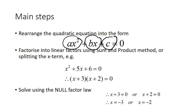So this is what we need on the left-hand side and we write the zero on the right-hand side. Once we've written our quadratic in that form, our next step is to factorize the quadratic on the left-hand side, either using the sum and product method or by splitting the x term.